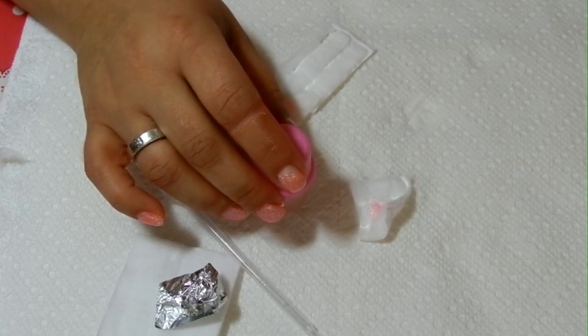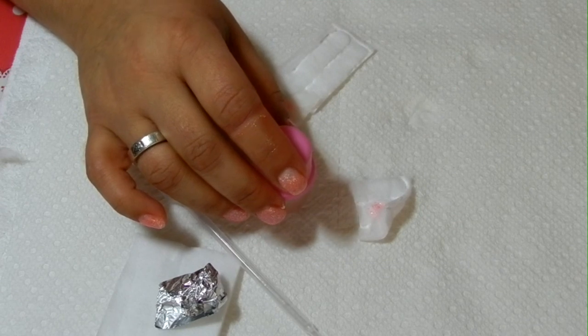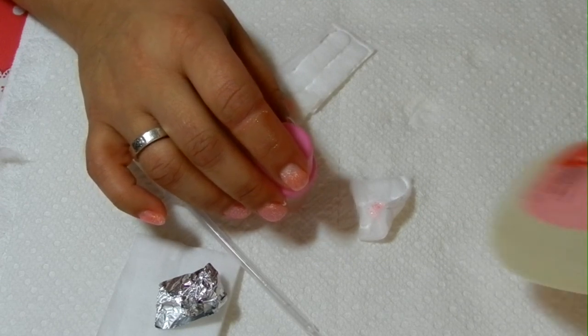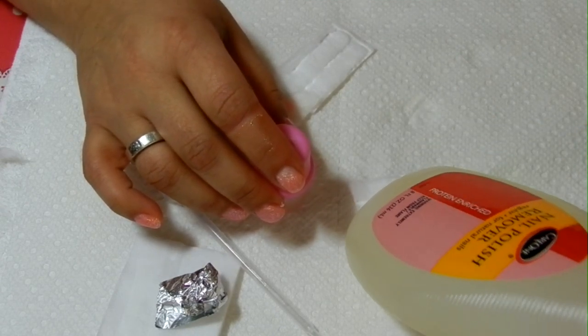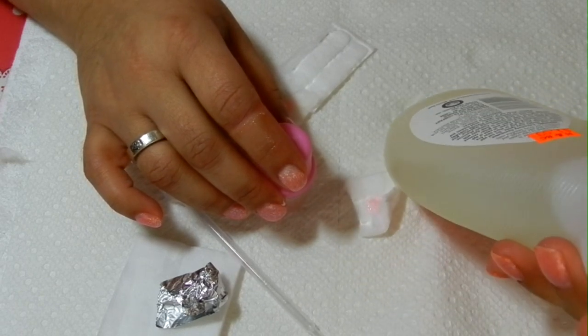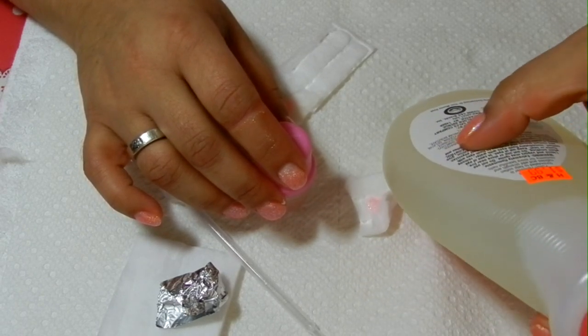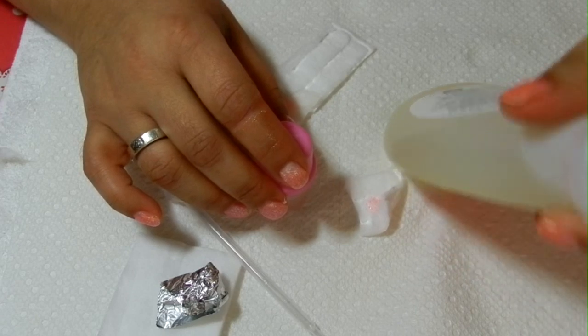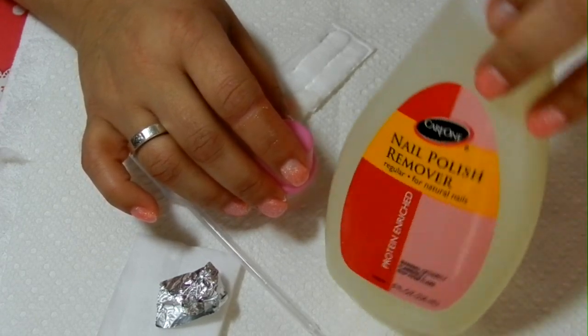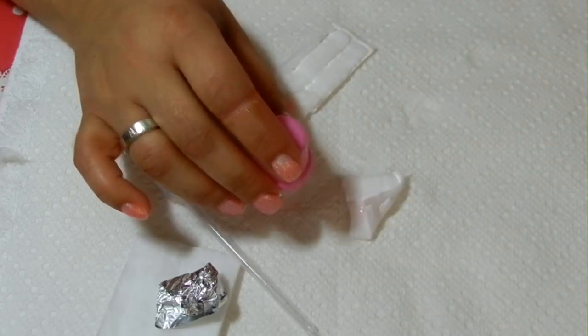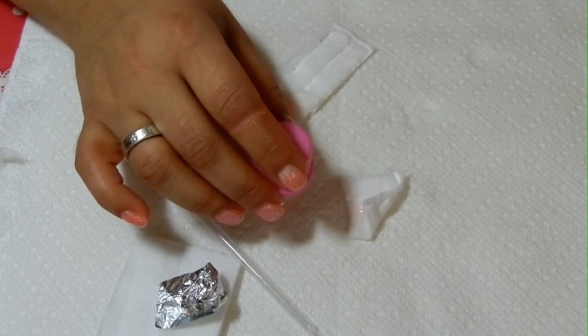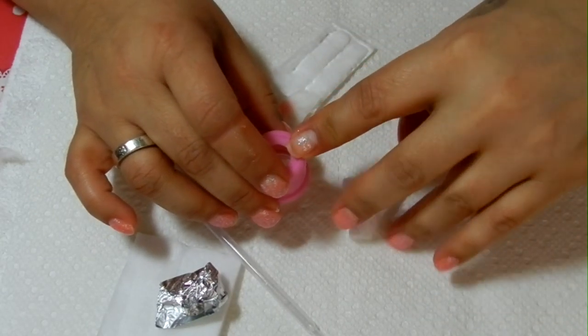Some people have used pure acetone. This nail polish remover says acetone in here, but I don't know if it's pure acetone because it doesn't state it on the bottle. I wouldn't use pure acetone either for nail polish - I would for acrylics, but not for nail polish.